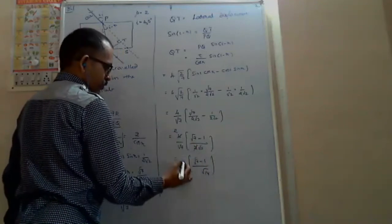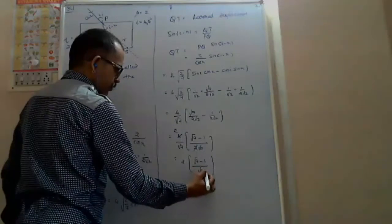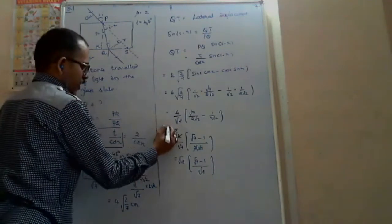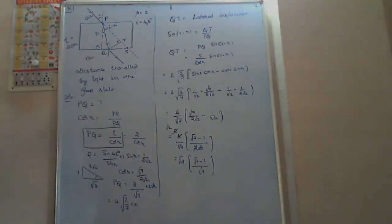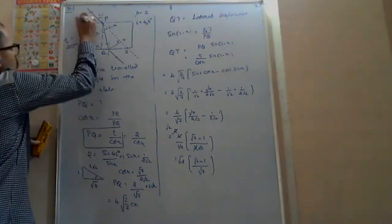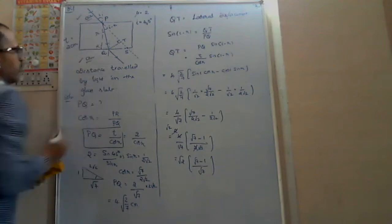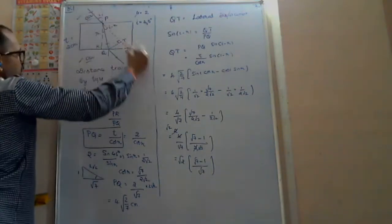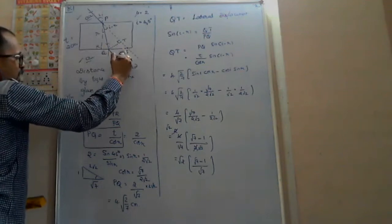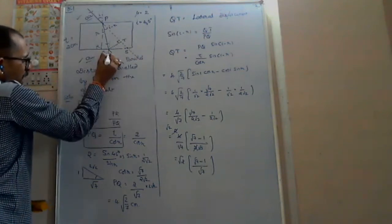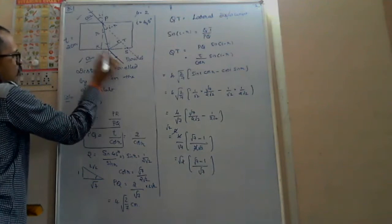The lateral shift equals root 2 by 7 into (root 7 minus 1). Now there is a theoretical point: if the two media on both sides of the glass slab are the same, like air, then the incident light ray and the emergent light ray are parallel, and the angle of emergence equals the angle of incidence.